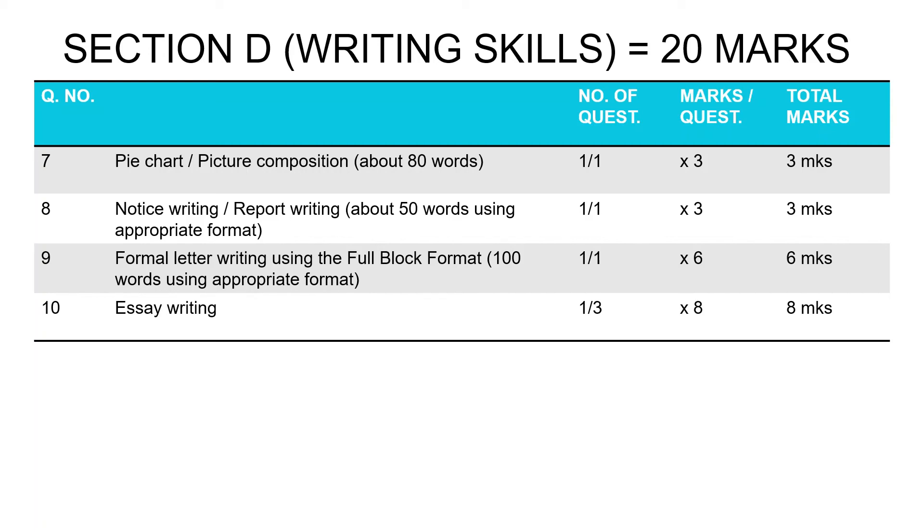The writing section is a section that has undergone a little bit of change from the previous pattern of the paper that was enforced around three or four years back. In the writing section, you have a total of four questions giving you 20 marks, which is more than it used to be before. In question number seven, you are either writing a pie chart or a picture composition. This is a visual stimulus question. You are not given a choice here—one of the two will be given to you. You will either be given a pie chart or a picture composition. Whatever you're given, you have to work with that—three marks for that. Question eight is notice or report. It will be around 50 words because you are getting marks here for the format as well, where you have to use the format prescribed by the board. Again here, the choice is not up to you. You are given one of the two; you have to write whatever you're given—three marks there. Question nine is you have to write a formal letter using the full block format. There is no informal letter in the 10th standard. Again here, you don't have a choice. Whatever you're given, you have to write a formal letter for six marks because you are using the full block format. Your word count should be around 100 words because you are also getting marks for your format.